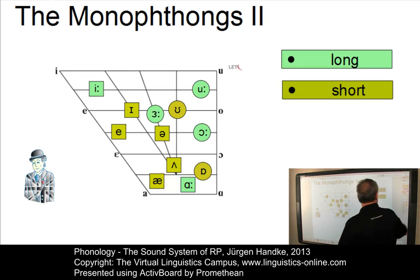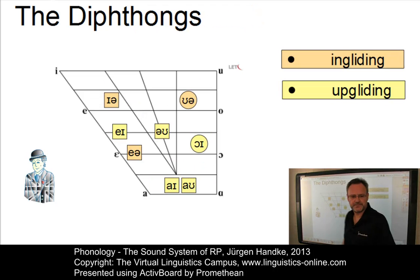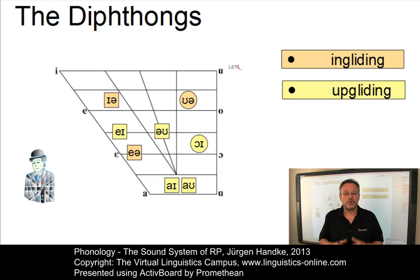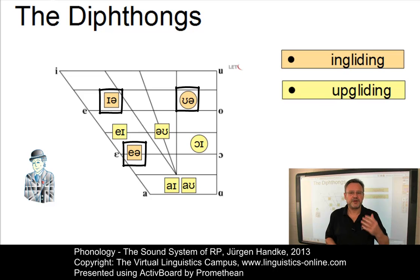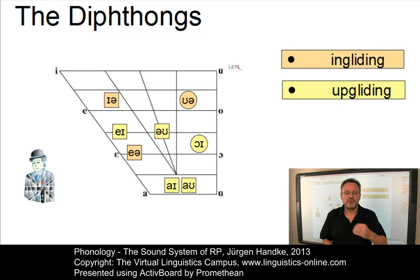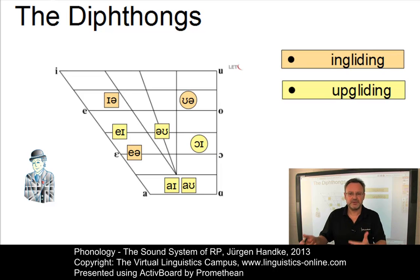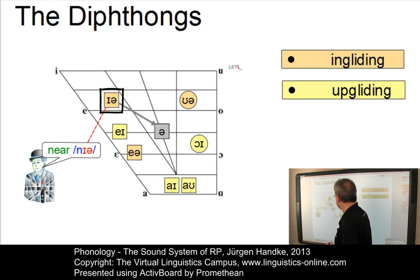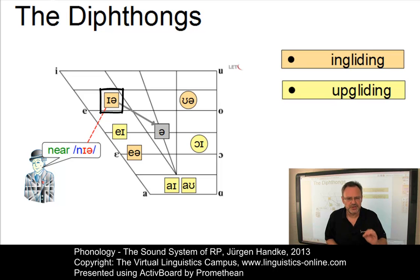Let us continue with the diphthongs. Depending on the tongue position of the second vowel — the so-called offset — the eight diphthongs can be grouped into three ingliding and five upgliding diphthongs. The ingliding diphthongs share the feature that the words in which they occur all have a post-vocalic orthographical R, phonetically realized by the diphthongal offset schwa. The first ingliding diphthong is 'near,' where the first element — a mid-high front E — is often produced too high by non-native speakers.